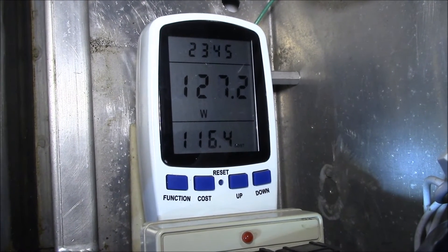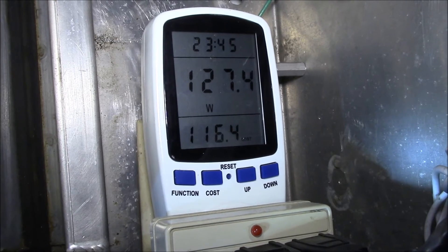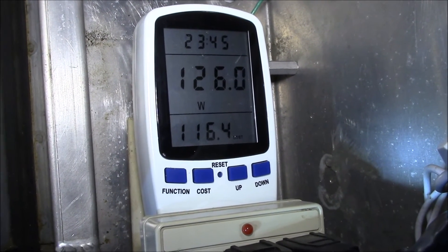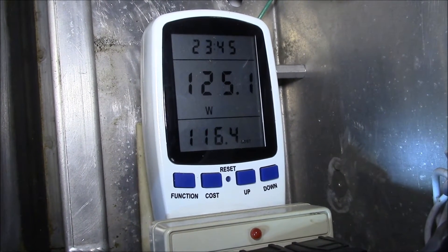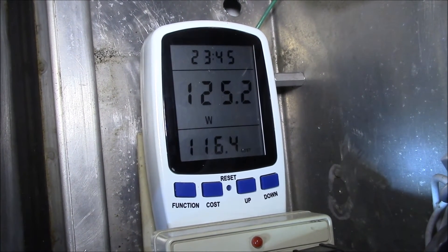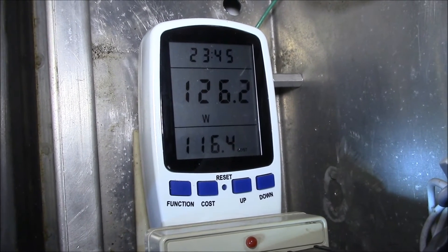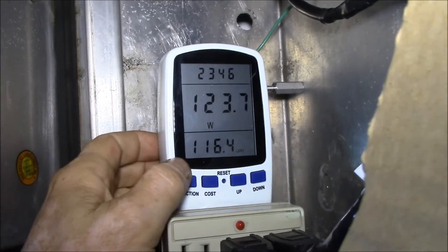This one shows watts on top and officially shows cost on the second line, but there's a trick you can do to make that cost line show kilowatt hours, which is what it's showing right now: 116.4. Let me show you what I do to make that happen as we step through the screens.